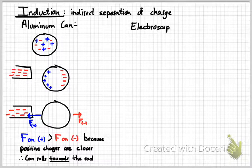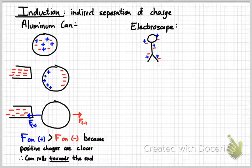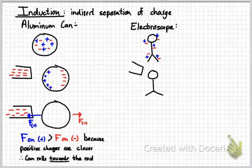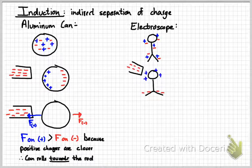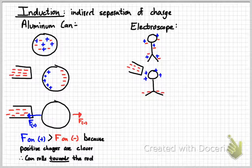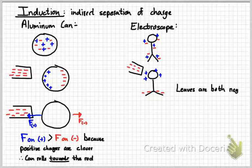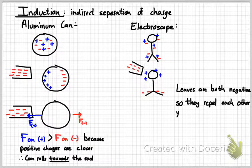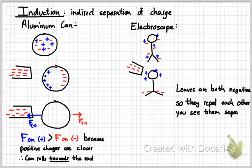The other example we need to remember is the electroscope. Again, it starts out with an equal number of positive and negative charges spread out evenly throughout it. When the negatively charged rod is brought near, the positives go to the top and the negatives go to the bottom. They're induced to separate. Because the bottom part are both negative, both leaves are negative, they repel each other. So we see them spread apart like we did in our lab.